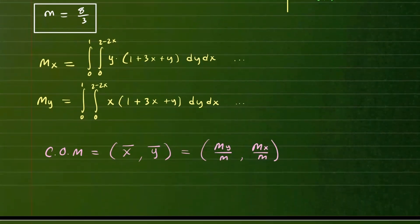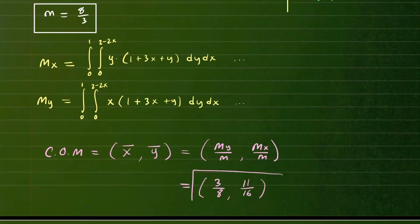After computing, the x-coordinate of the center of mass comes out to 3/8, and the y-coordinate comes out to 11/16. So those are your values for x-bar and y-bar. I hope this makes sense. Now let's take a look at moment of inertia.